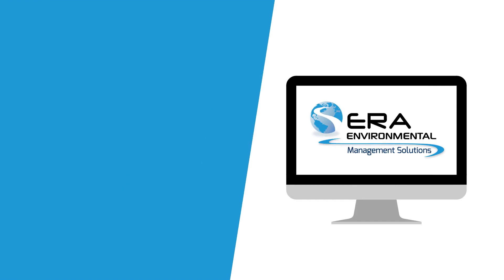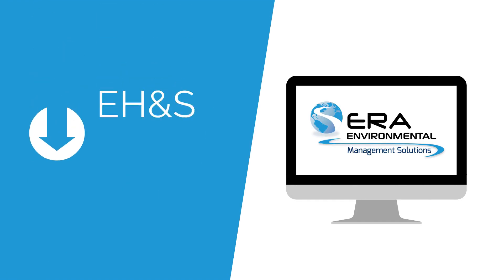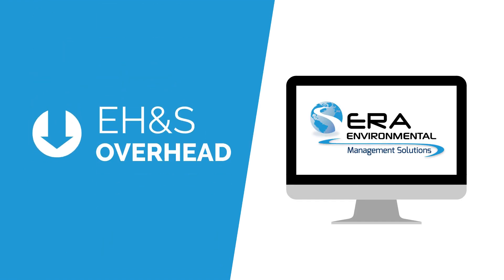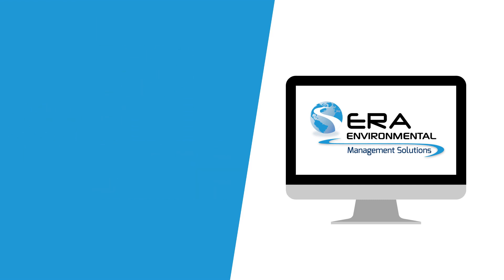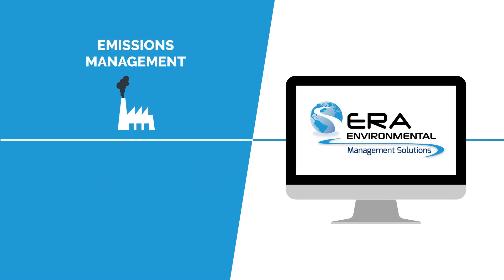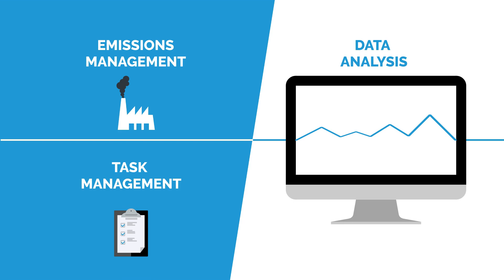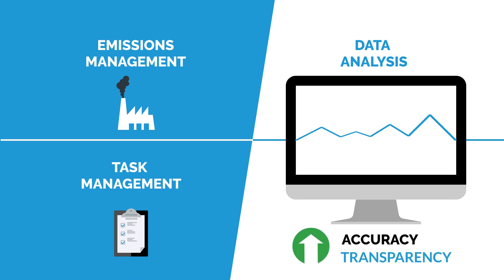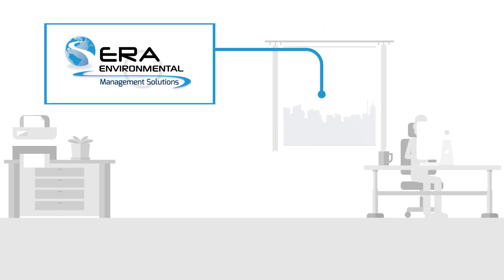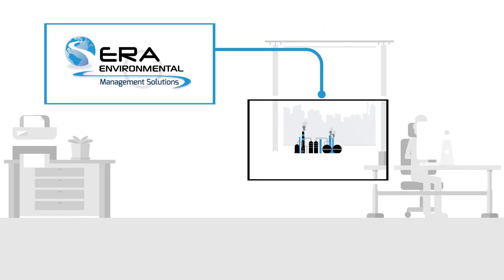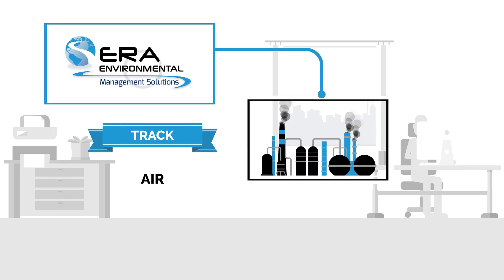With ERA's software solution, you can reduce your EH&S overhead by over 80%. ERA's software can streamline your emissions management, data analysis, and task management with greater accuracy and transparency. Let's explore how ERA's environmental software can help Julia's facility track air, water, and waste outputs.